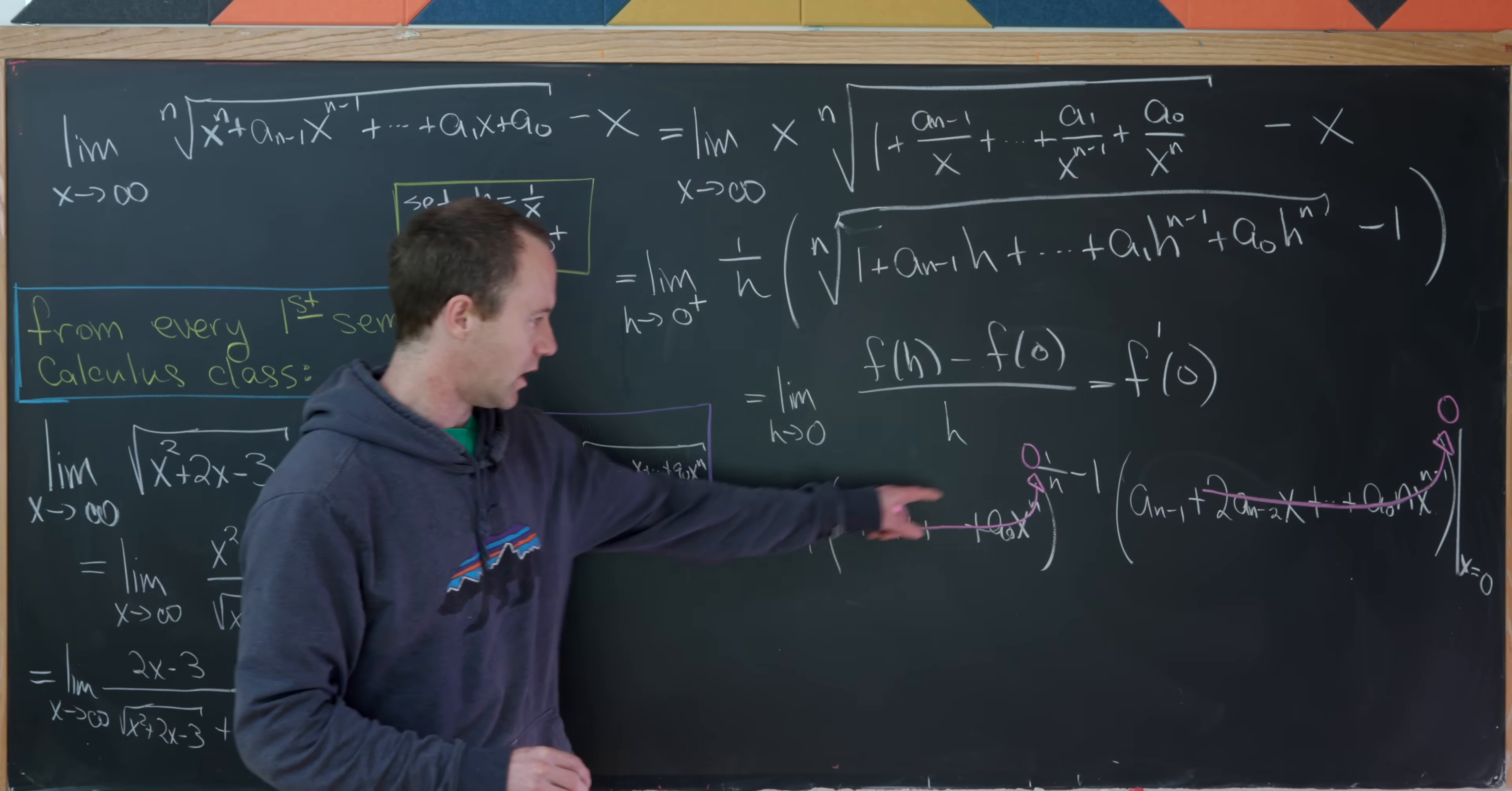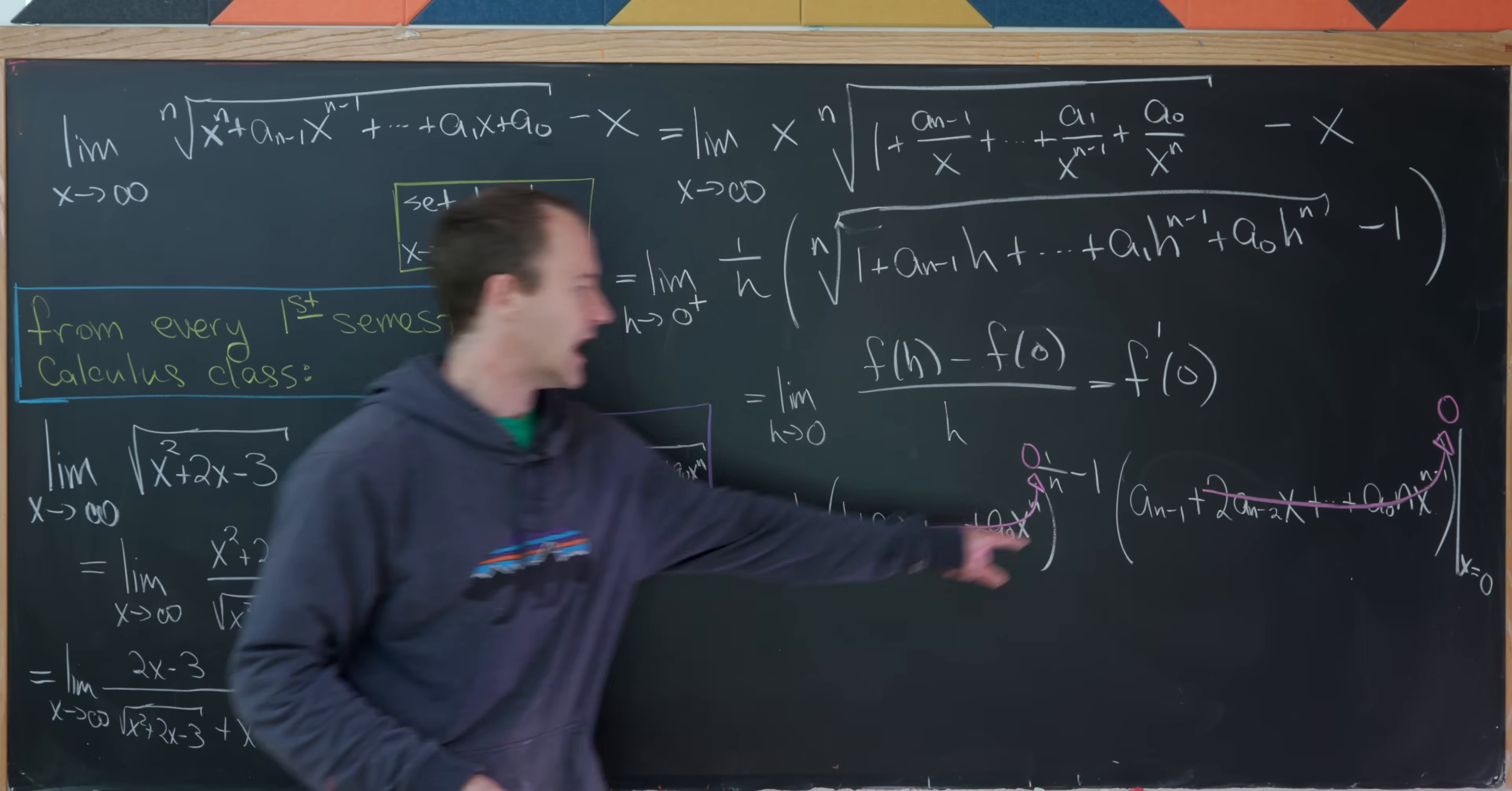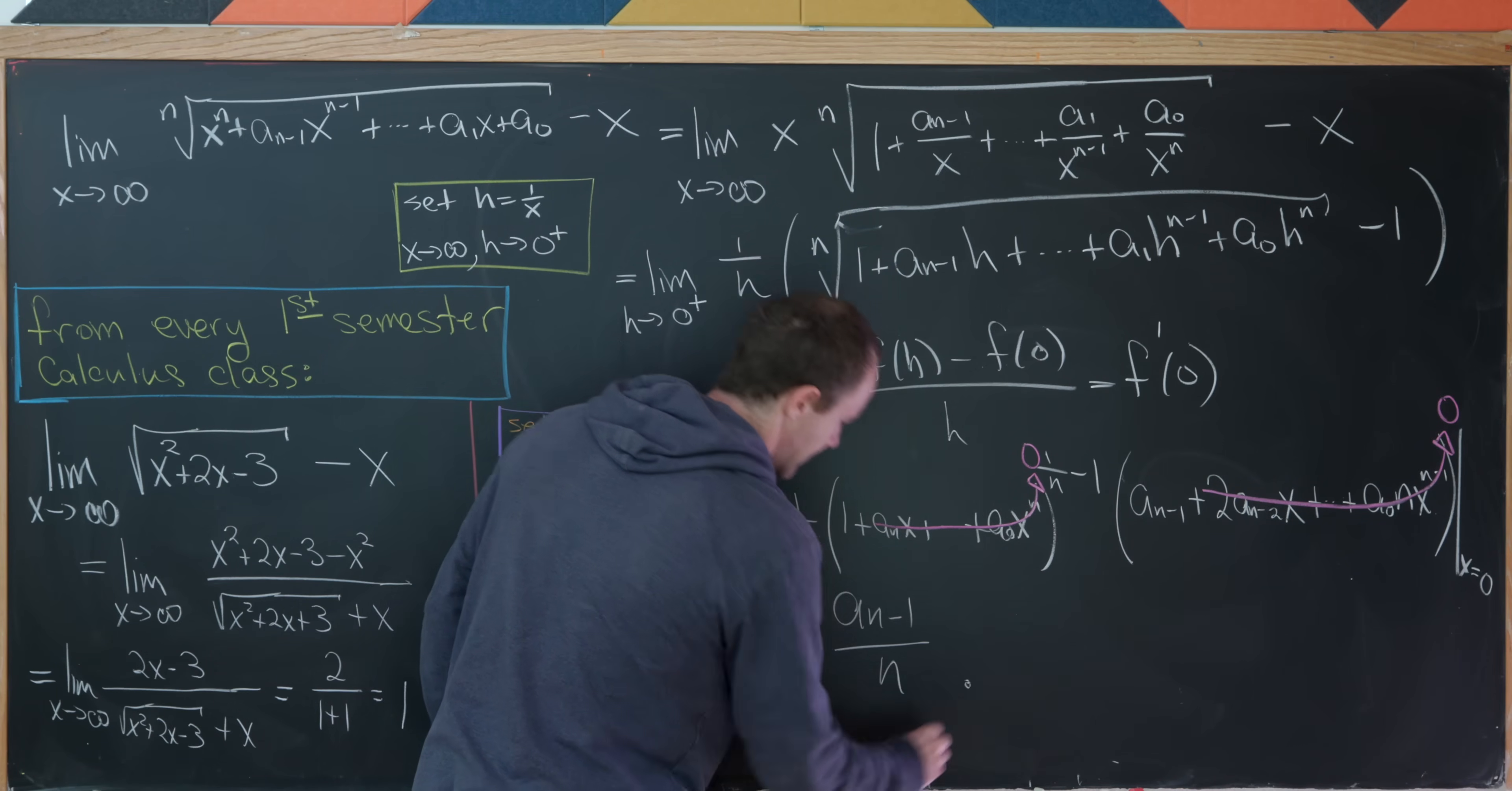So that's going to leave us with 1 to some power, but it doesn't matter. 1 to any power is 1. And then we have a sub n minus 1 times 1 over n. In other words, we have a sub n minus 1 over n.